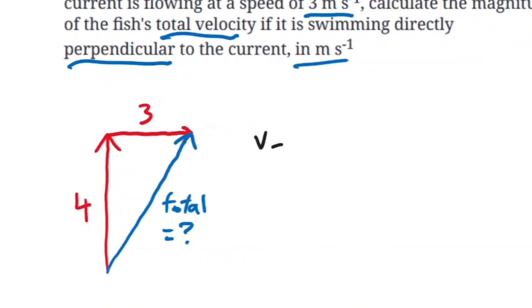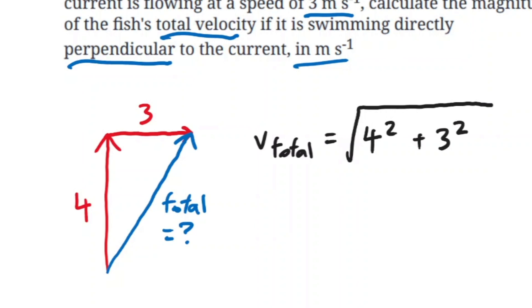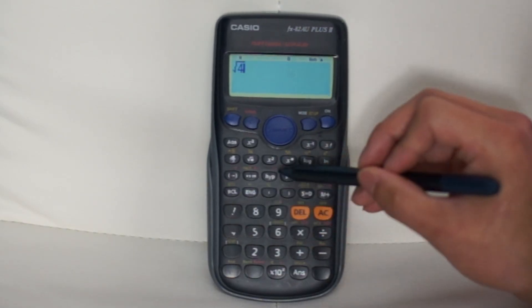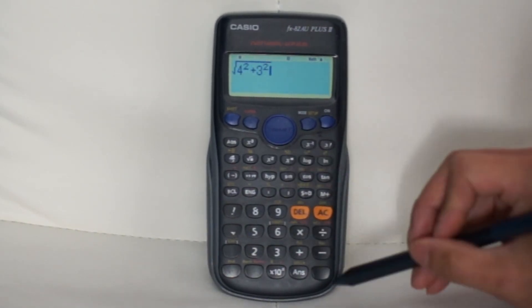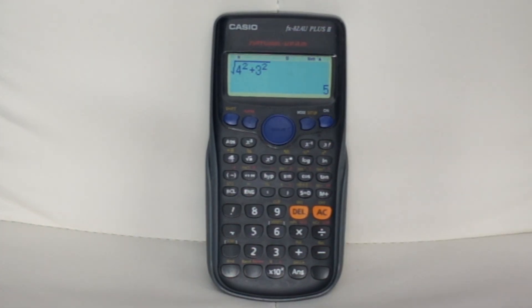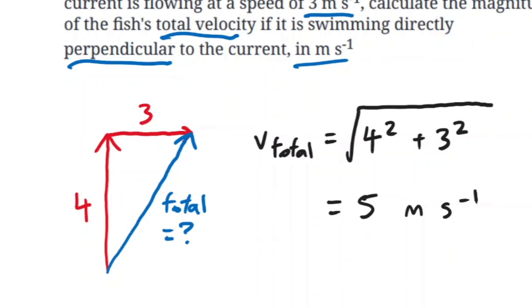The v total will be equal to the square root of 4 squared plus 3 squared. If we plug that into our calculator, we get an answer of 5 meters per second. That's it for vector addition, and I hope you found that useful. See you in the next video.